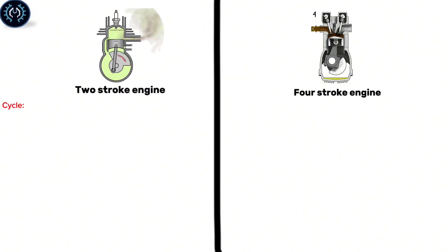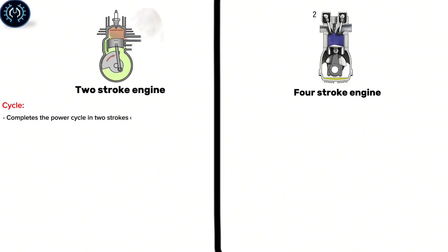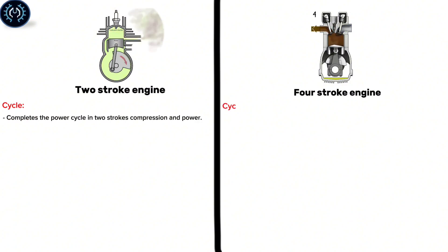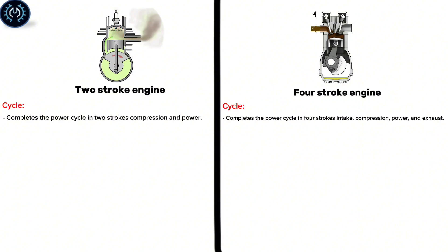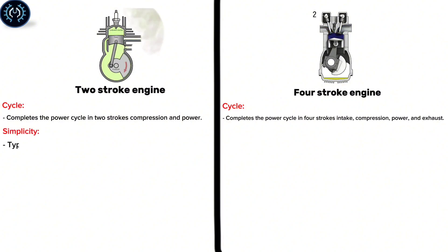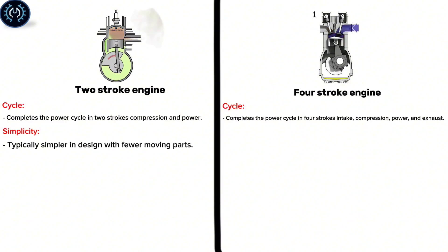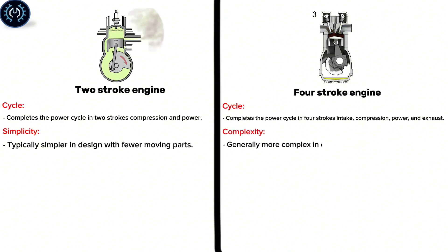Cycle – the two-stroke engine completes the power cycle in two strokes: compression and power. The four-stroke engine completes the power cycle in four strokes: intake, compression, power, and exhaust. Simplicity – the two-stroke is typically simpler in design with fewer moving parts. Complexity – the four-stroke is generally more complex in design with additional components.